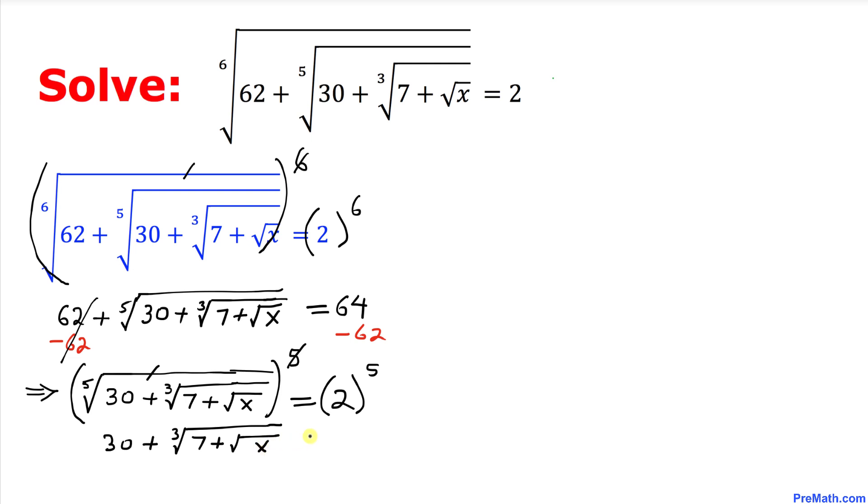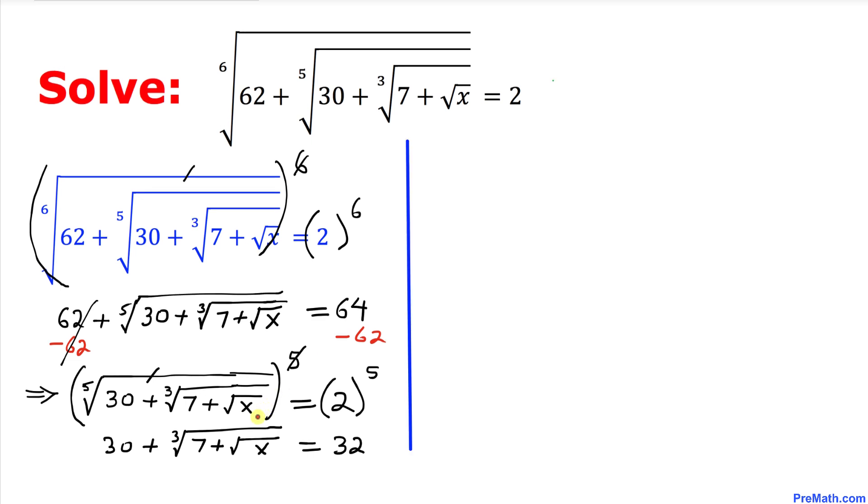So we ended up with 30 plus the cube root of 7 followed by the square root of x equal to 2 power 5 is 32, and now we want to isolate this radical part. So let's subtract 30 from both sides.